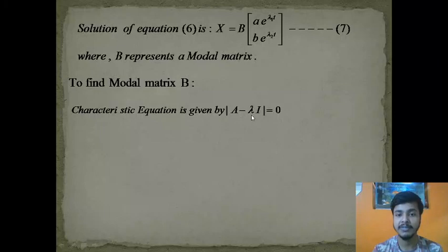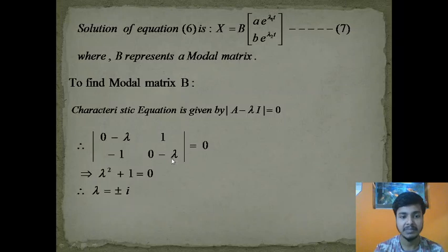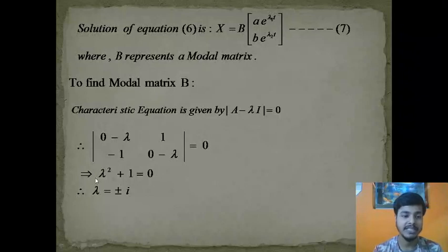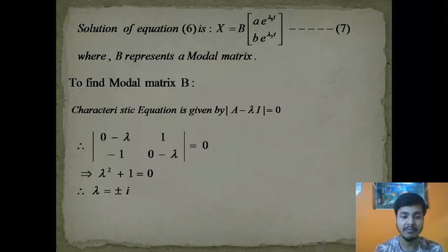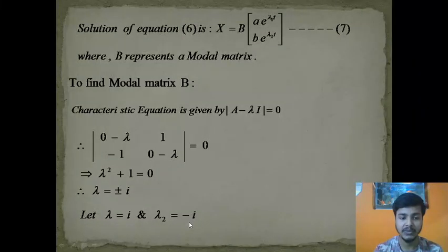Eigenvalues are given by the characteristic equation det(A − λI) = 0. Solving this: (−λ)(−λ) − (1)(−1) = 0 gives λ² + 1 = 0, so λ² = −1, meaning λ = ±√(−1) = ±i. Therefore λ₁ = i and λ₂ = −i. This completes step 2 of the working rule.